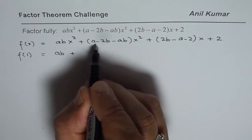And that is how we can fully factor the given expression as f(x) = (x − 1)(bx + 1)(ax − 2). I hope you find it interesting. Go through this video once to understand how we factored the expression. I am Anil Kumar — subscribe to my videos and learn a lot. Thank you and all the best.